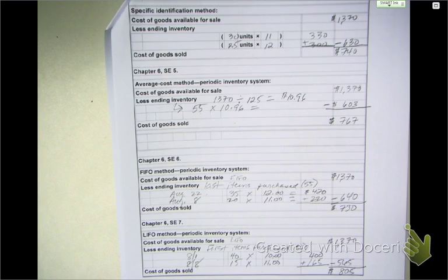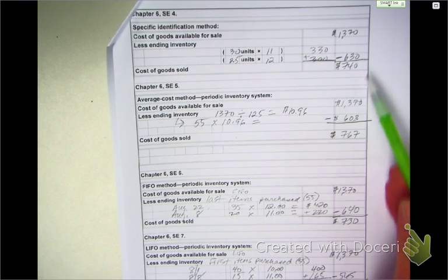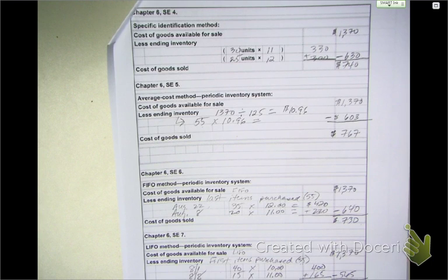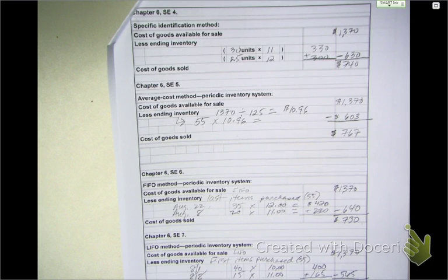So, you can kind of see under these four different approaches, I have four different values for my cost of goods sold and four different inventory values. That affects both your profitability and your balance sheet. All right. So, the homework is just going to be SE2 and SE3. I'll put it up in Applia. Good job. Thank you very much.